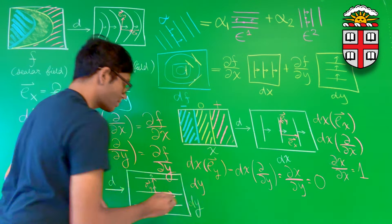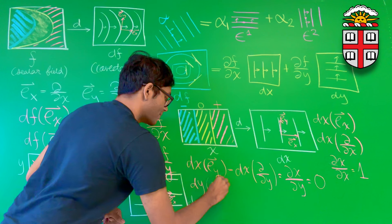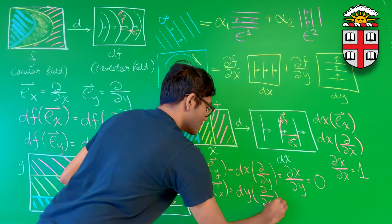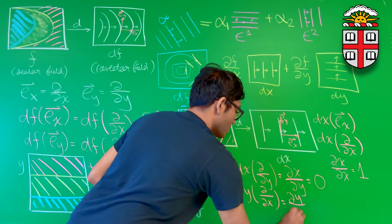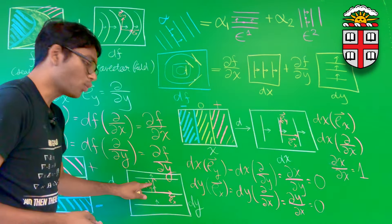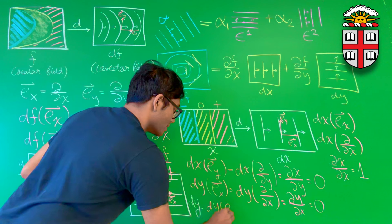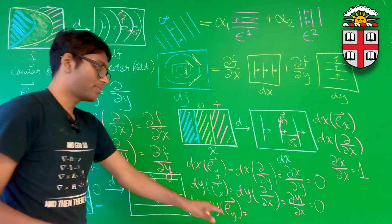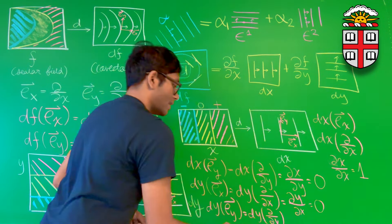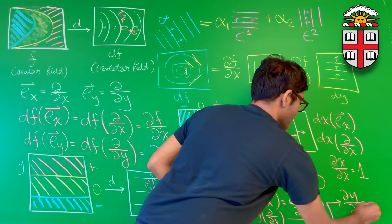How many contour lines does e_x pierce? Applying the co-vector field dy to e_x, I replace e_x with ∂/∂x and obtain ∂y/∂x = 0. How many lines does my y basis vector pierce? That's dy(e_y) = dy(∂/∂y) = ∂y/∂y = 1.